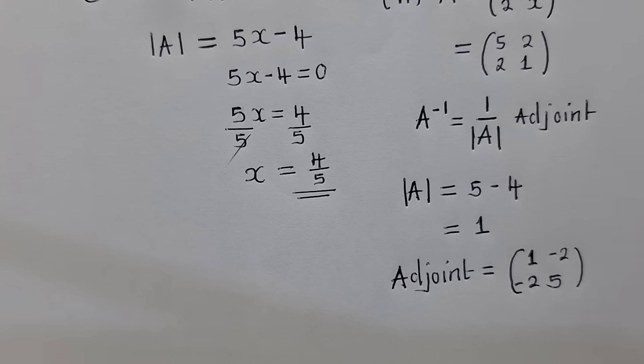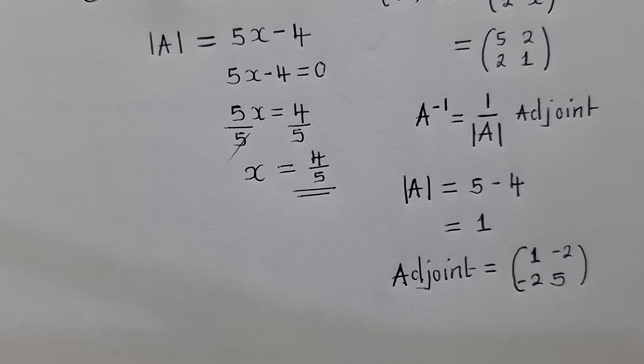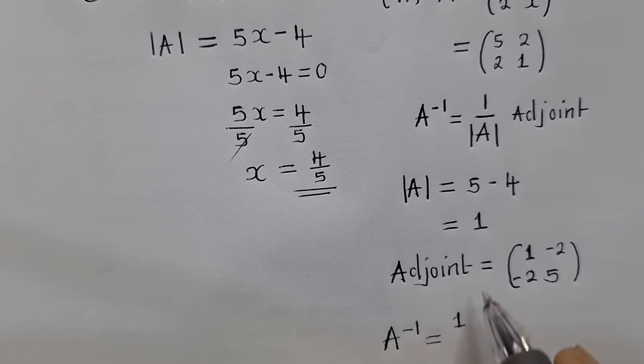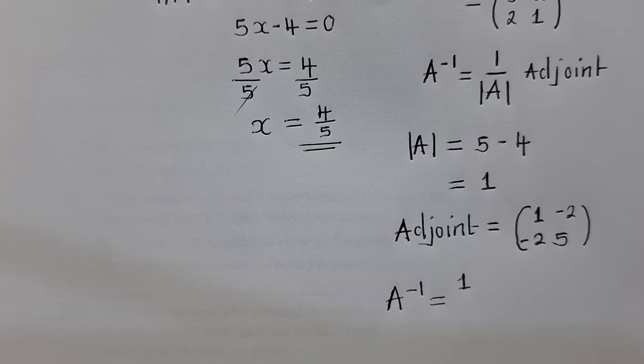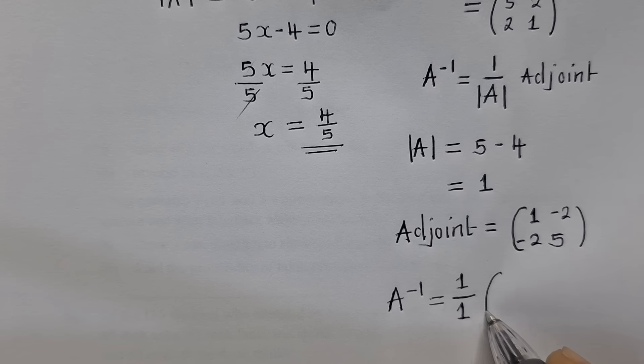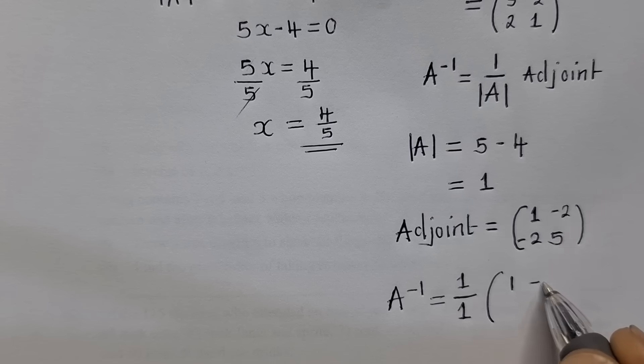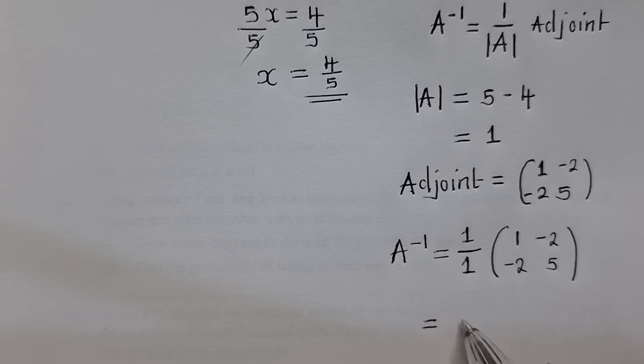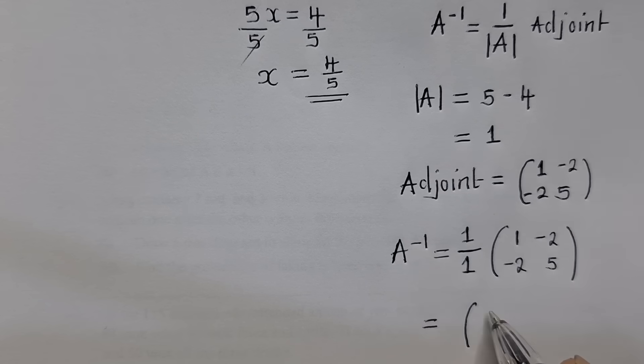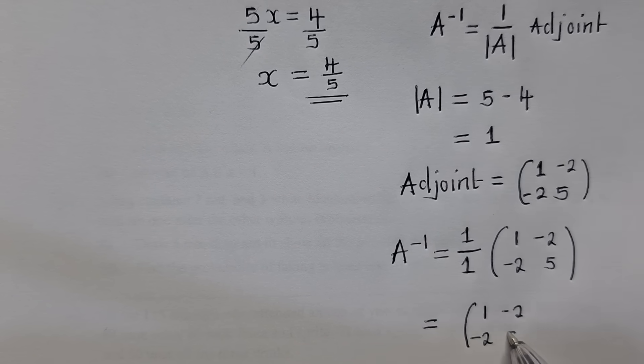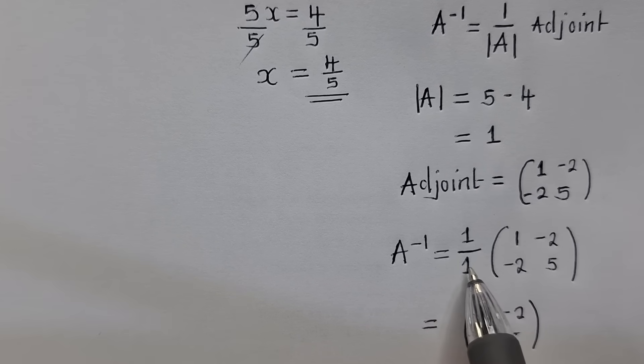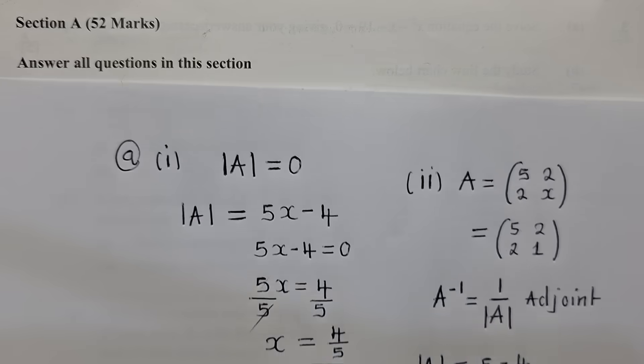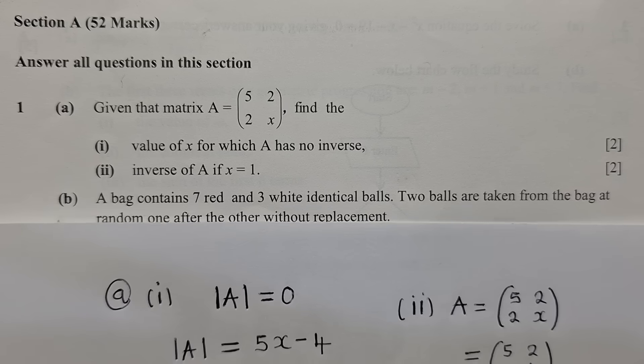So we have what the formula is telling us to have. We can say A inverse is equal to 1 over the determinant, which is 1, times the adjoint, which is (1, -2; -2, 5). We can now simplify all this. When we multiply, when we divide 1 by 1, it will give us 1. 1 times what is inside here, we still get the same. So this is the solution for question A.